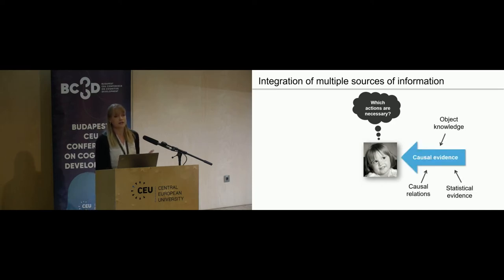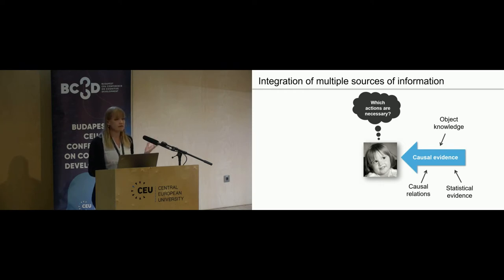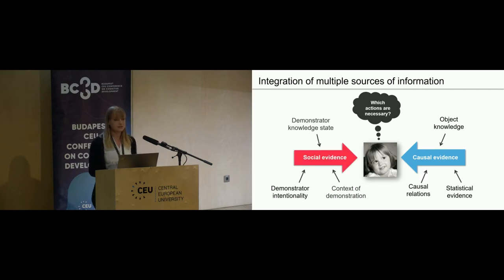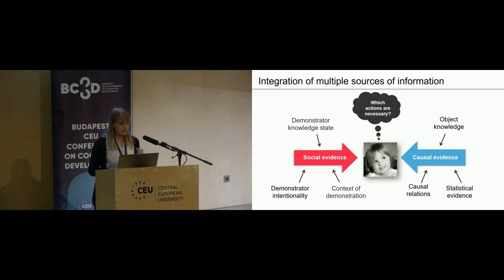On the one hand, there's causal evidence—for example, their prior knowledge about how objects work in general, how the physical world is structured, such as gravity and the contact principle, as well as the statistical evidence in the demonstrated action sequence. On the other hand, there's also social evidence. You may rather copy from a professional golf teacher than from fellow learners. You also consider the intentionality of the demonstrator—do they actively want to teach you these actions, or do they just accidentally do something? In that case, you will probably not copy.